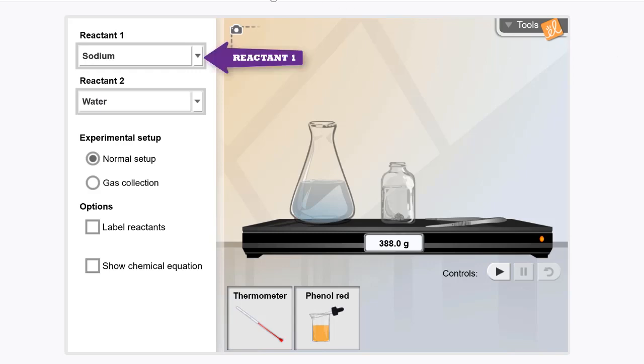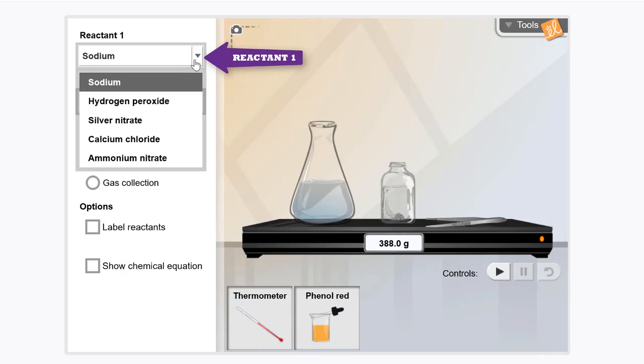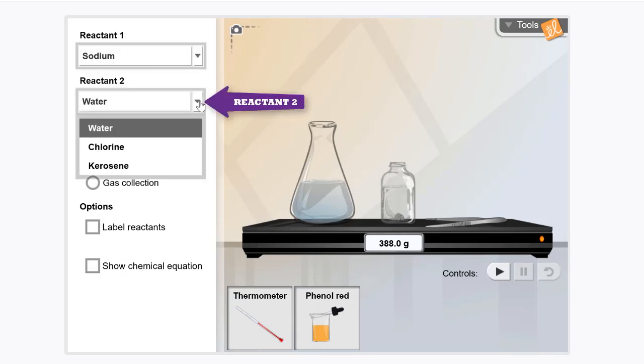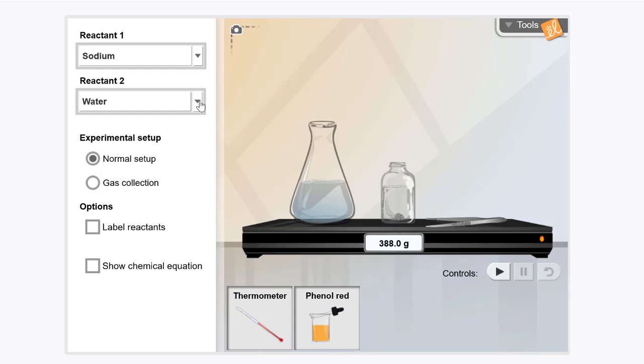We can use the drop-down menu in Reactant 1 and 2 to choose from a variety of reactants. Let's check that Reactant 1 is sodium and Reactant 2 is water. Let's click play and make some observations.